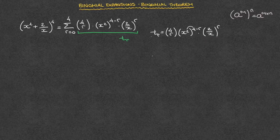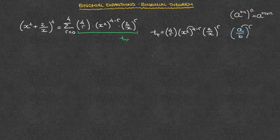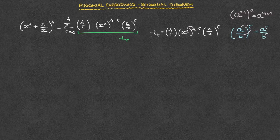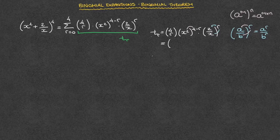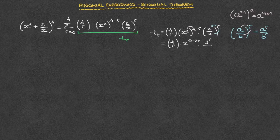Looking at the second pair of parentheses, we can see that we have 2 over x, all of which is being raised to the power of r. To take care of that, we use the rule: if we have a number a over a number b, and they are both being raised to a power r, then the power of r distributes onto both a and b — that's equal to a to the power of r over b to the power of r. So we'll have 2 to the power of r over x to the power of r. Our general term equals the binomial coefficient 4r times x to the power of 8 minus 2r, times 2 to the power of r over x to the power of r.